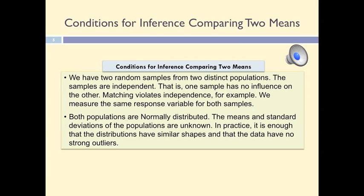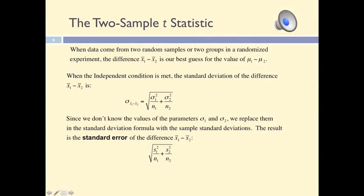However, in the sample the distribution does not have to be perfectly normal. Usually, if we have a symmetric distribution and there are no strong outliers, we can use T procedures to make inferences and tests.